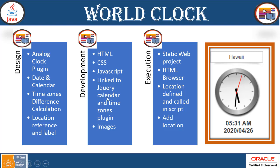Linked to jQuery calendar and time zones plugin — this will help you to link into the jQuery plugin, which basically works on calendar and different types of time zones and images. Images are basically nothing but those resources we have used for creating an analog clock. The pointers, the clock handle, and skin of the clock — all these things are nothing but images. They are not in specific code; we just present those images in such a form that it looks like a complete clock. Since it is a static web project, you don't need to have server deployment. But optionally, you can add this particular web component in your dynamic web project and include it in your website.